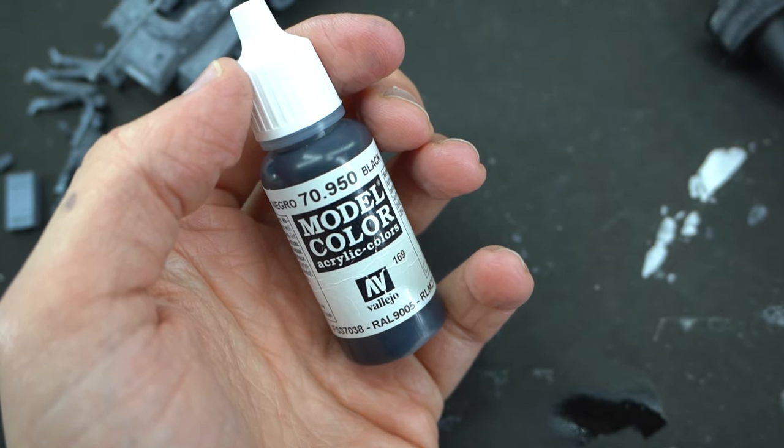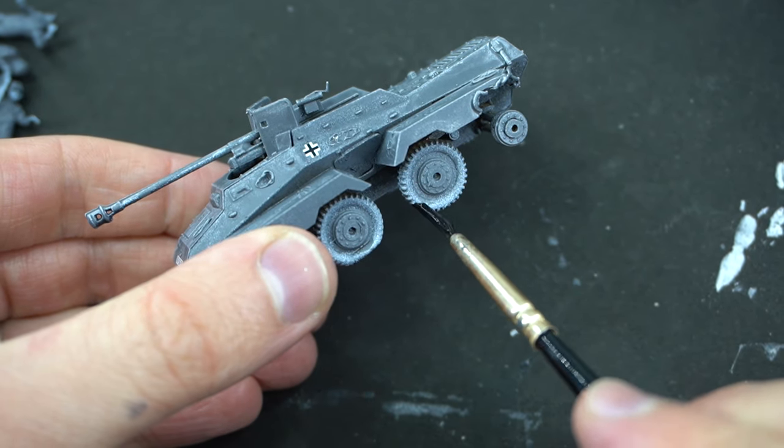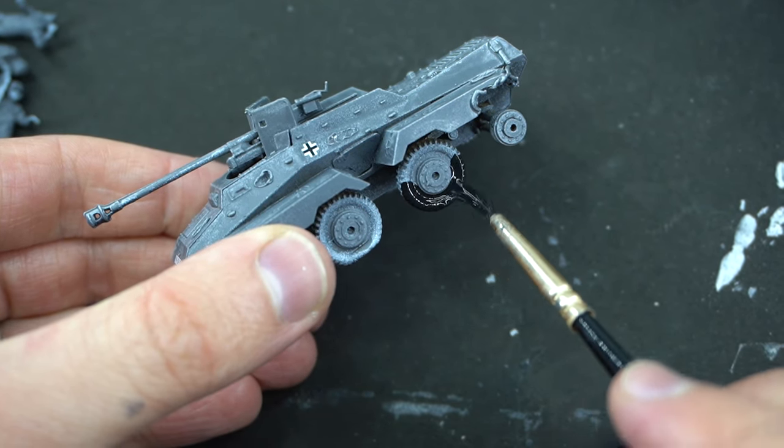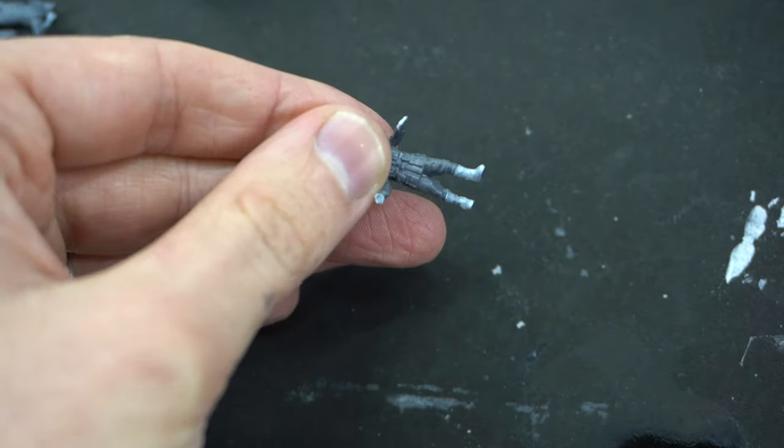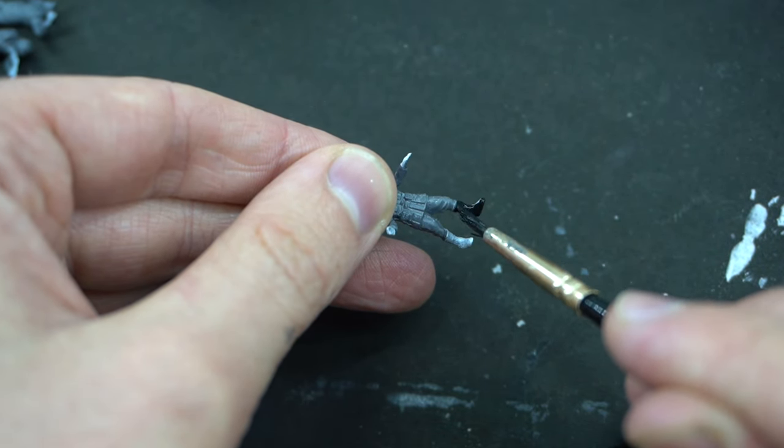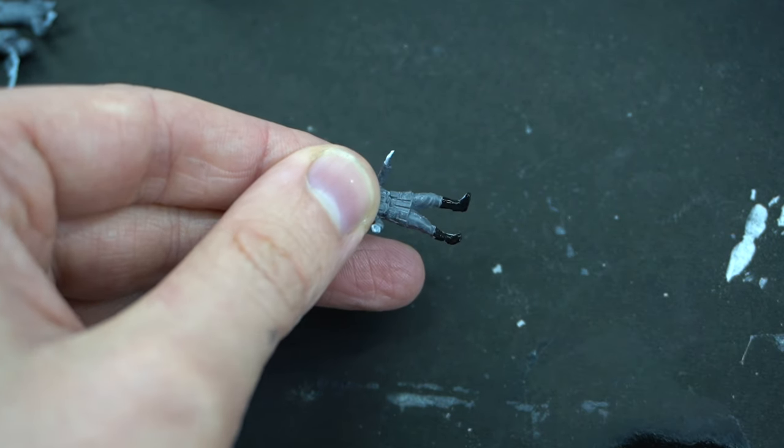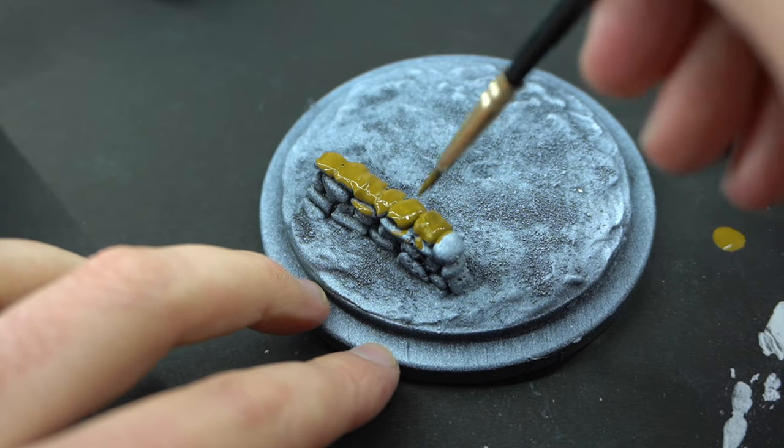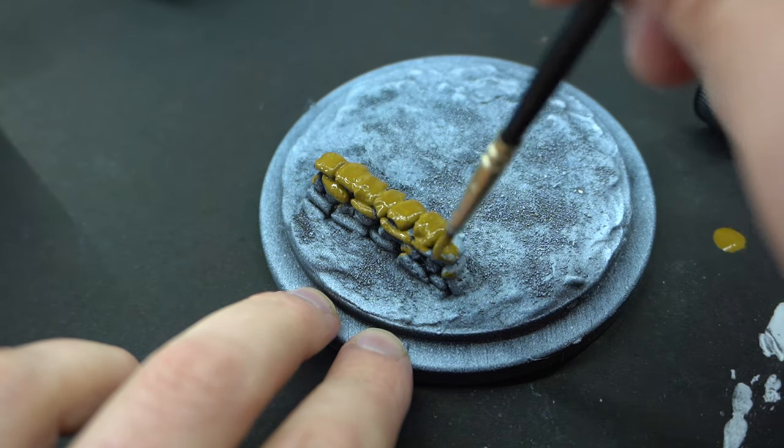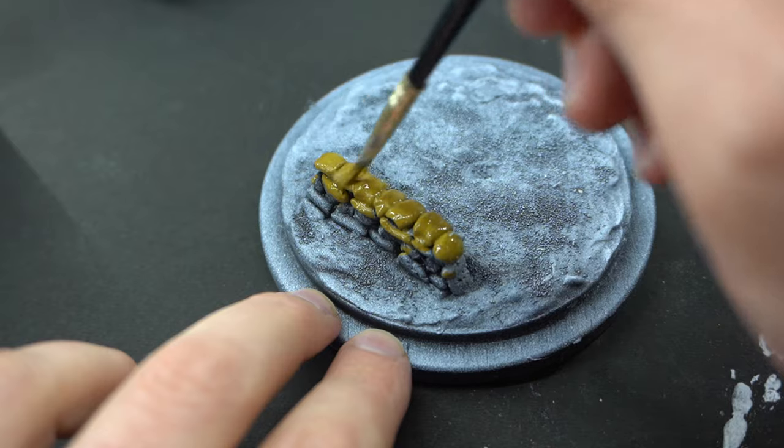Vallejo Black was used to carefully paint the tyres on the wheels, taking care to avoid the areas I've already painted grey. I'll also use this black paint on the boots of the figures. And then I moved on to using this English Uniform paint on the sandbags. Both of these paints had been thinned down with a touch of the acrylic thinners previously used.